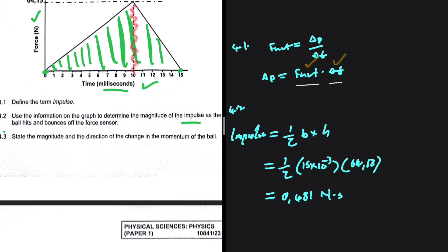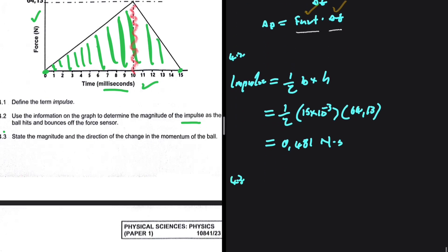In 4.3, we need to state the magnitude and the direction of the change in momentum of the ball. The impulse equals the change in momentum of the ball, so we already have our answer - we just need to quote it. The magnitude is 0.481 kg·m/s. Why kg·m/s? Because when you calculate the change in momentum, you use mass and velocity. When you calculate impulse, you have Newton-seconds. That is the only difference.